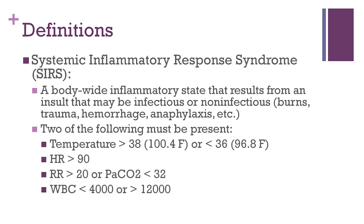The first is systemic inflammatory response syndrome, or SIRS. SIRS is a body-wide inflammatory state — it can be thought of as a very vigorous systemic immune response. The key about SIRS is that it may be triggered by any sort of event that causes the immune system to become very activated. So infection is one possible trigger for SIRS, but other causes may include trauma, burns, anaphylaxis, pancreatitis, surgery, and venous thromboembolism.